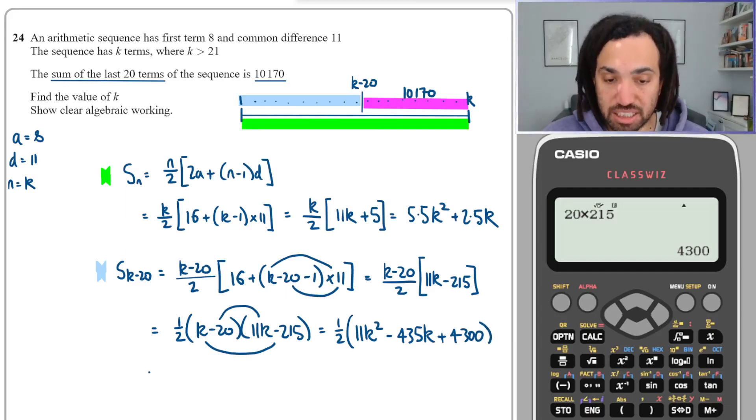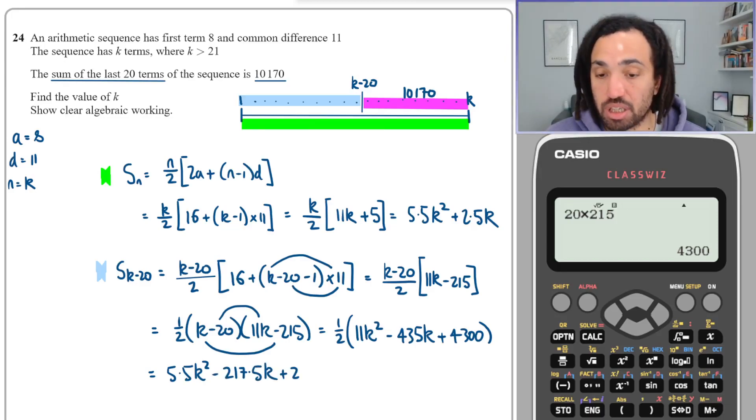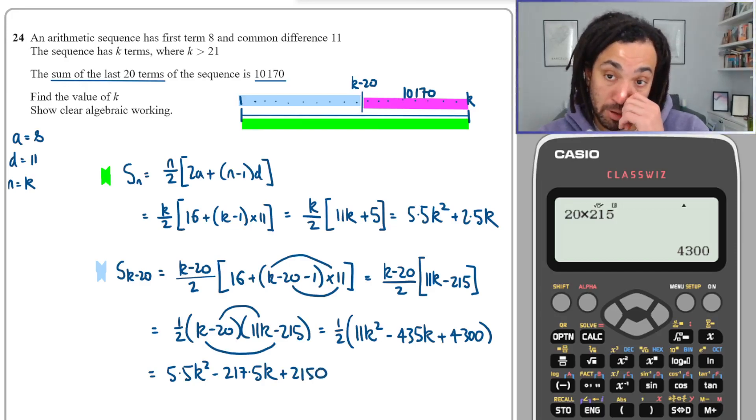Okay, fantastic. And now I'm going to half this. So I'm going to get 5.5k squared, I'm going to get minus 217.5k, and I'm going to get plus 2,150.